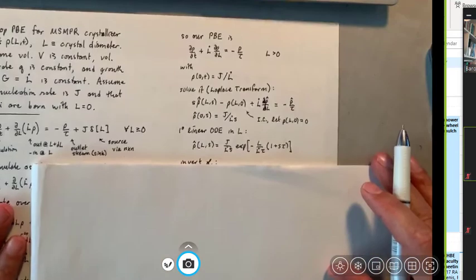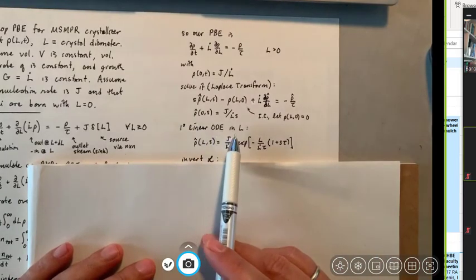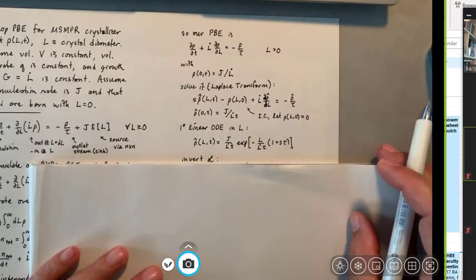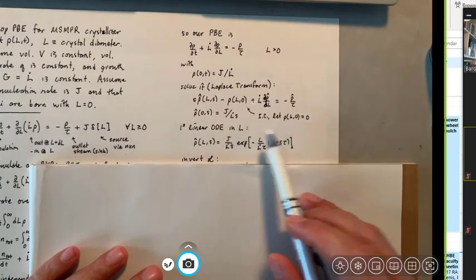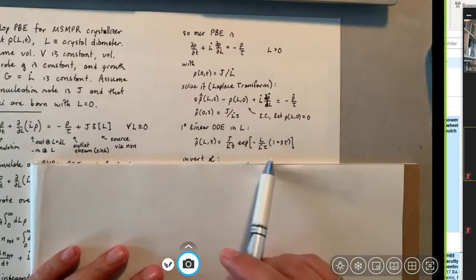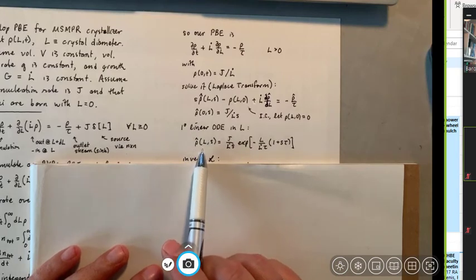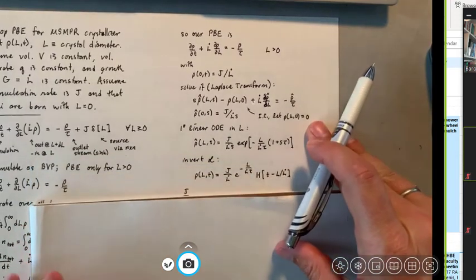So now what I want to do is to go back and recognize that I have a first order linear ODE in L in this equation. And we can solve that using integrating factors. So we use integrating factors and we can arrive at this solution. This is now giving us the Laplace transform domain solution. So I have rho hat of L and s is this function of s and L. And now we have to do the inversion. So I cheated. I plugged this into Mathematica to do the inversion for me.